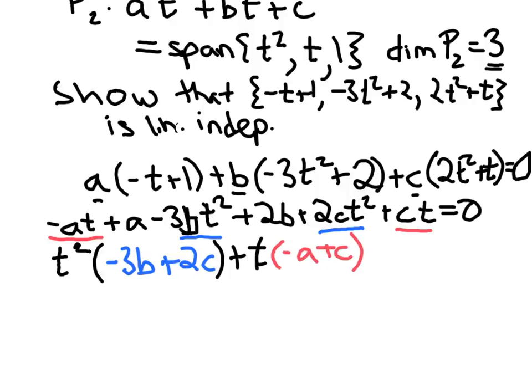And then lastly, my constant terms, which I'll collect in its own parentheses. So I have positive a here, positive 2b here, so a plus 2b is equal to 0. So the only way that this sum is 0 is if each of these coefficients is 0.